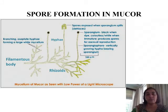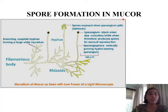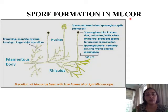The last method of asexual reproduction in multicellular organisms is spore formation. We are studying spore formation in mucor, which is a multicellular fungus. Earlier we studied yeast, a unicellular fungus that reproduced by budding, but now we study mucor. This fungus is very commonly found growing on stale bread and chapati. Any substance with moisture is prone to the growth of mucor, and apart from moisture it also requires humidity and warmth.